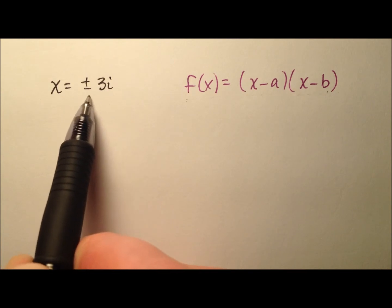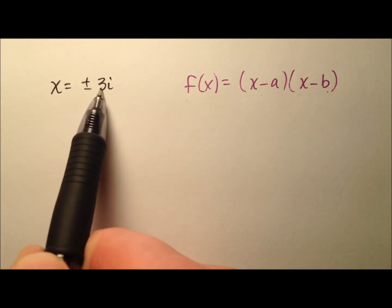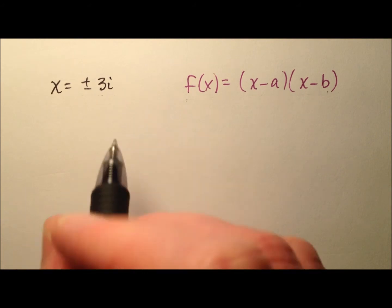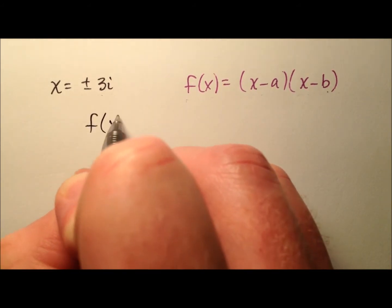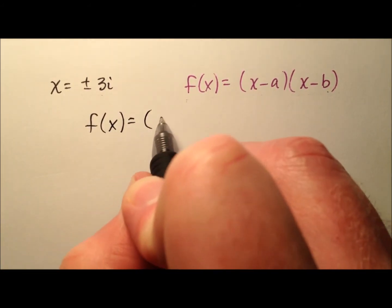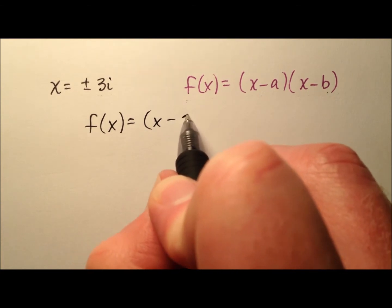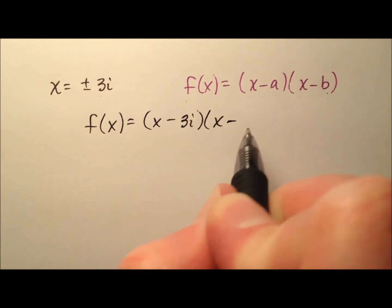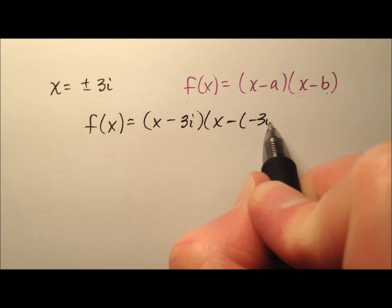Well, that's nice because in our case, I already know what the roots are. They're positive 3i and negative 3i. So I can write my function f(x) as x minus 3i and x minus negative 3i.